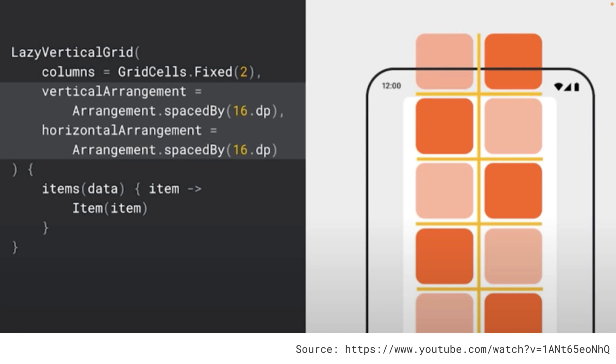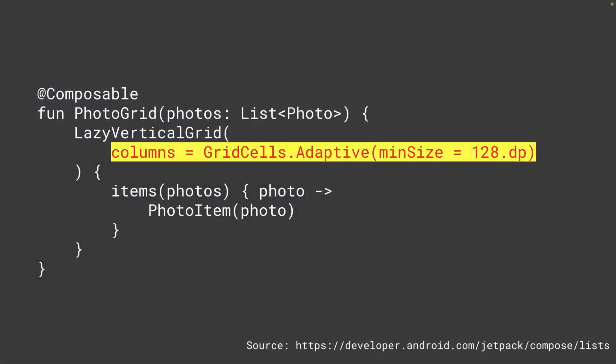Notice that with a fixed number of columns that may not look good on large screen devices like tablets. In order to support devices with different screen sizes you can use GridCells.Adaptive and specify the minimum width for each column. The number of columns now becomes dynamic based on device width. Using the minimum width and device width, the grid will fit as many columns as possible, and any remaining width is distributed equally among the columns after the number of columns is calculated.